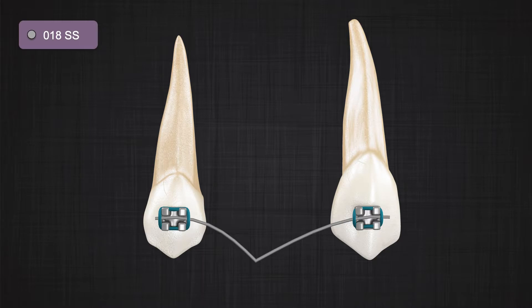Depends on the distance between line of action of the force and the center of resistance, the moments appear in the space that can change the third order angulation of the teeth. Remember, with the round wire, the adjacent teeth can rotate independent of each other. They don't affect each other.